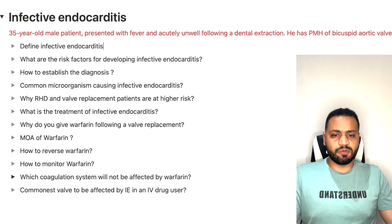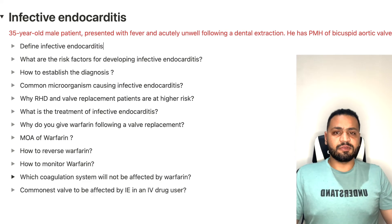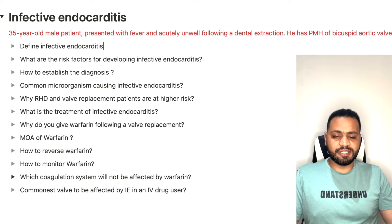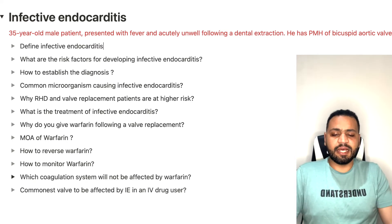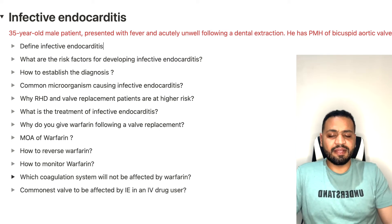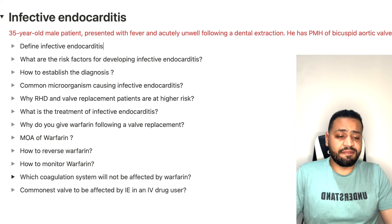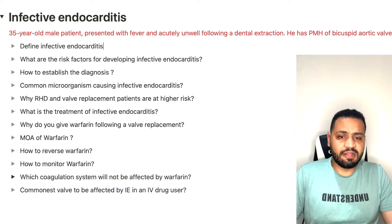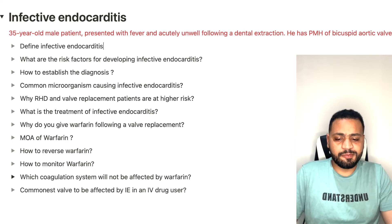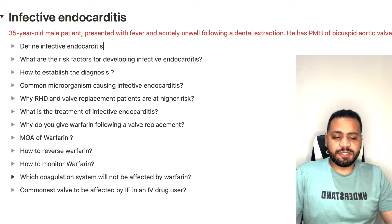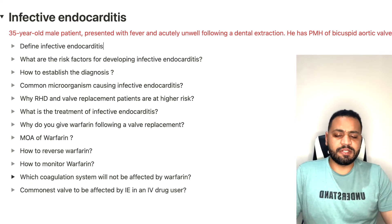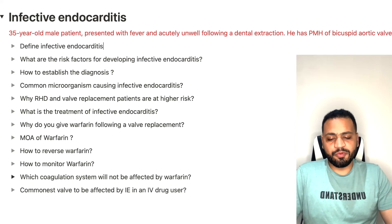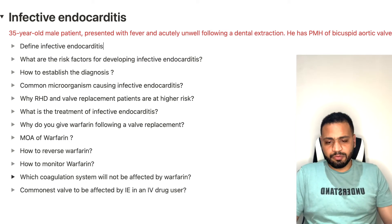For treatment of infective endocarditis: primarily antibiotics are needed, and the first-line agents are ceftriaxone or vancomycin, though there may be some restrictions. If the patient has a prosthetic or mechanical valve in situ, it will need to be removed as it represents a septic focus. If there is no response to medical treatment, you might consider valve replacement or heart transplantation, though this puts patients at high risk of graft rejection and they will require steroids.